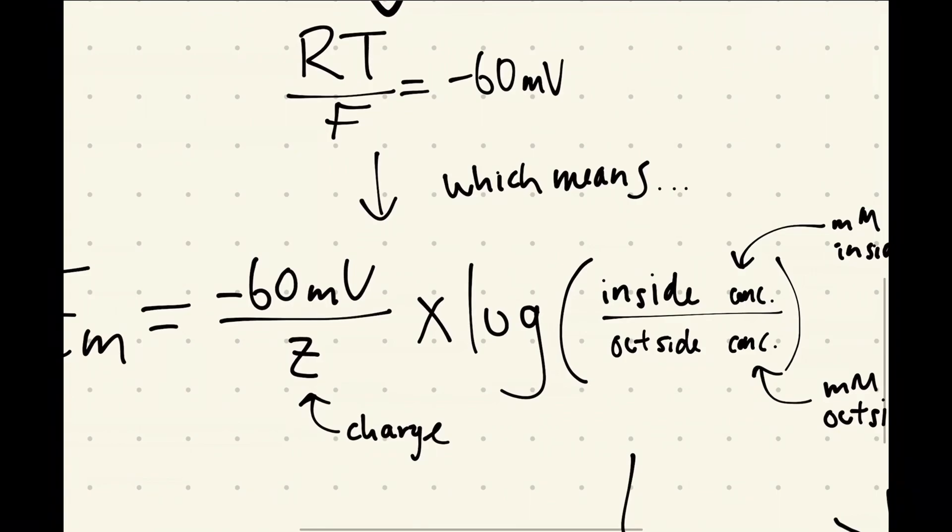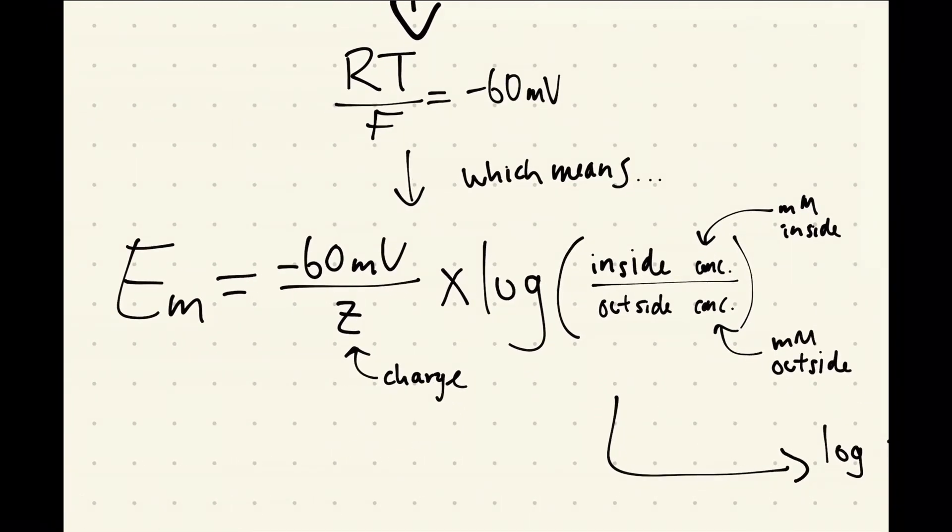So that makes your equation a lot simpler. It turns into EM equals negative 60 millivolts over Z, which is your charge, times the log of your inside concentration and then your outside concentration.